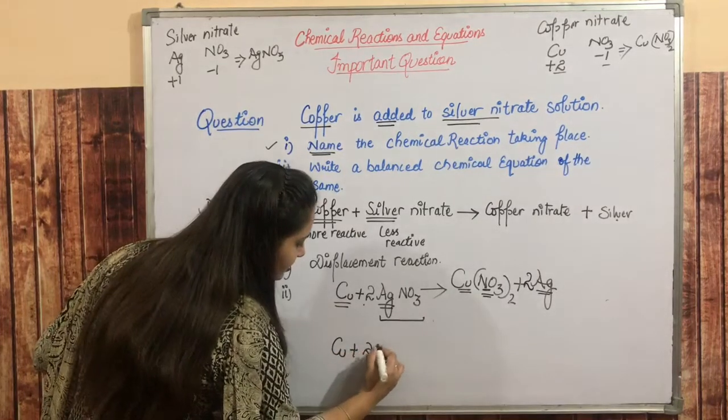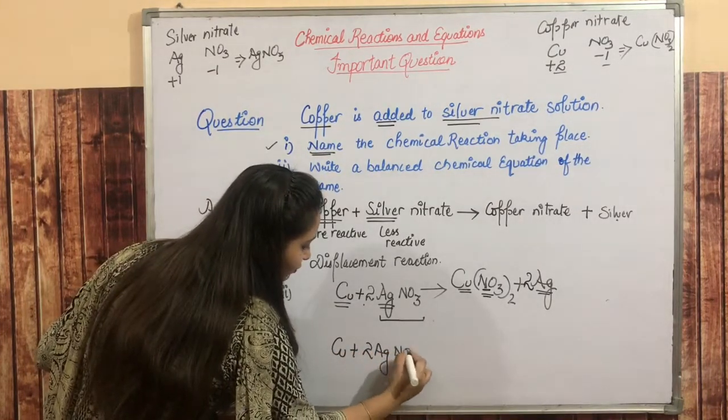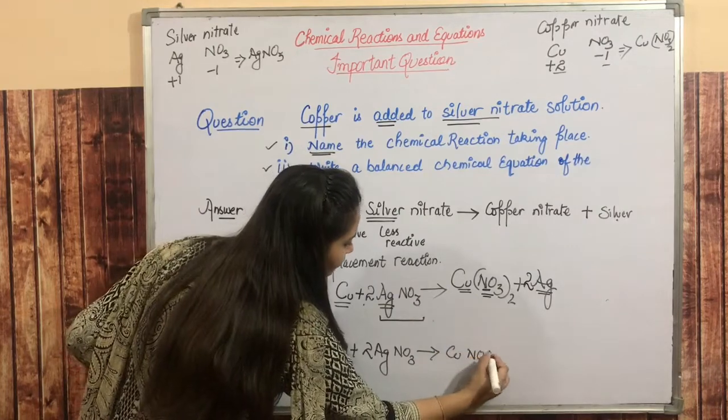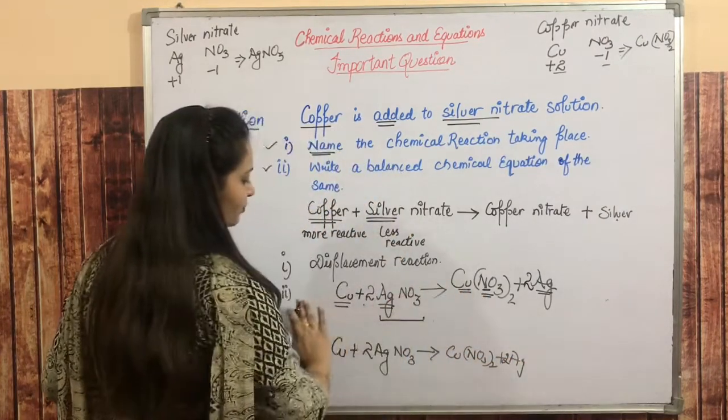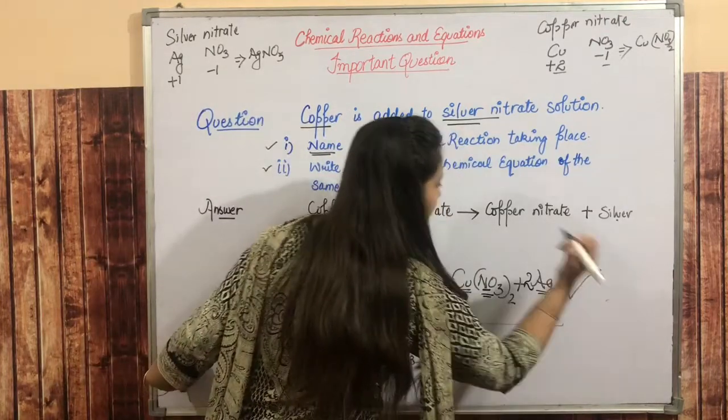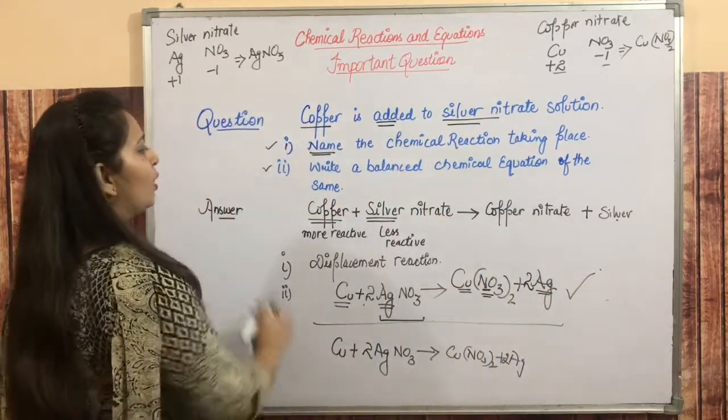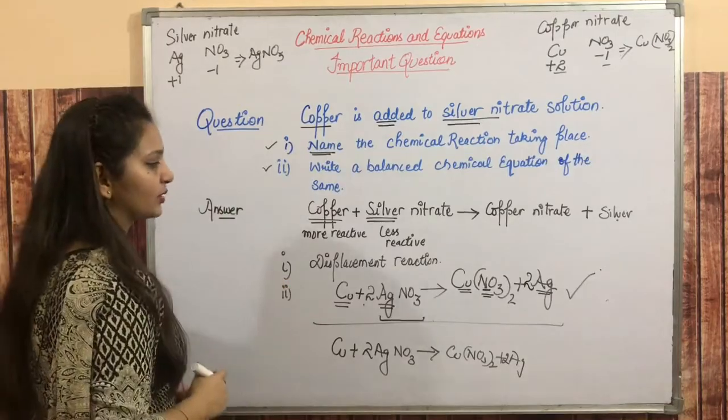What is? Cu plus 2AgNO3 gives Cu(NO3)2 plus 2Ag. So this is your answer, and here the whole question is covered.